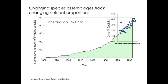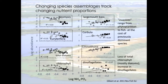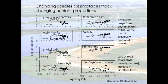Looking more closely at San Francisco, among species that have increased over time: dinoflagellates are increasing, many more flagellates, microzooplankton Limnoithona, invasive clams, largemouth bass, and sunfish — large predators coming in. There has been a loss of diatoms and an overall loss of chlorophyll, a loss of Eurytemora and Neomysis. All these invasive species have come in, but there have been declines in these species in relation to N:P — shown here as ammonium to phosphate.